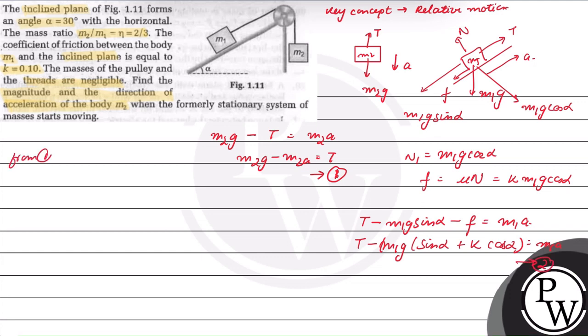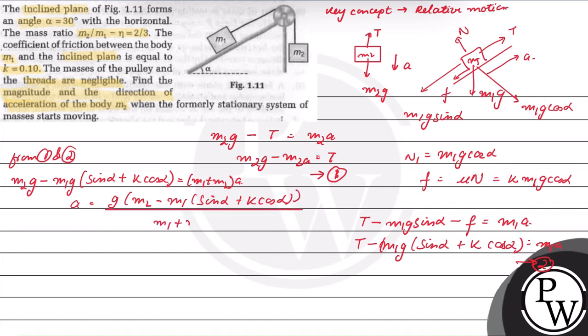From first and second, M2G minus M1G times (sin alpha plus k cos alpha) is equal to (M1 plus M2) times A. So, A value is g times (M2 minus M1 times (sin alpha plus k cos alpha)) upon (M1 plus M2) for downward motion.